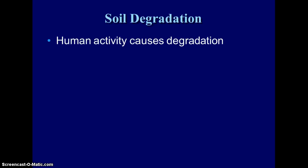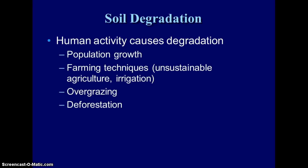Human activity causes degradation. As our population grows, we need to produce more and more food, so our farming techniques become unsustainable. When we use irrigation, we create problems causing leaching, salinization, and erosion. We're overgrazing, which is causing desertification — some of our grasslands are actually turning into deserts.